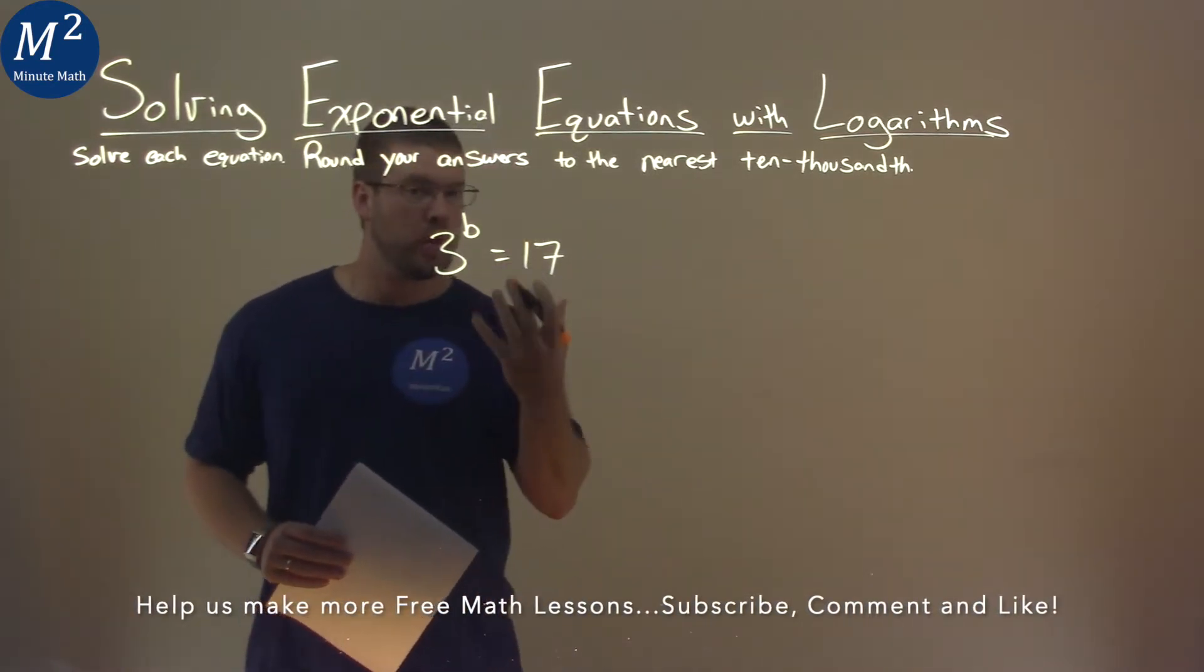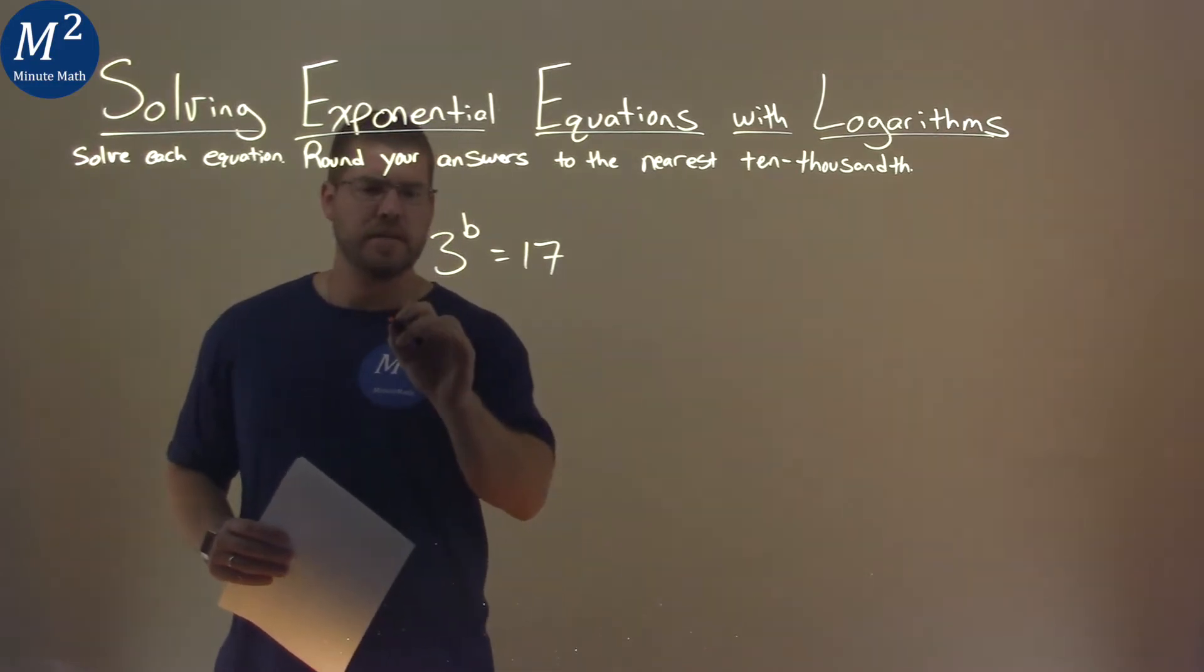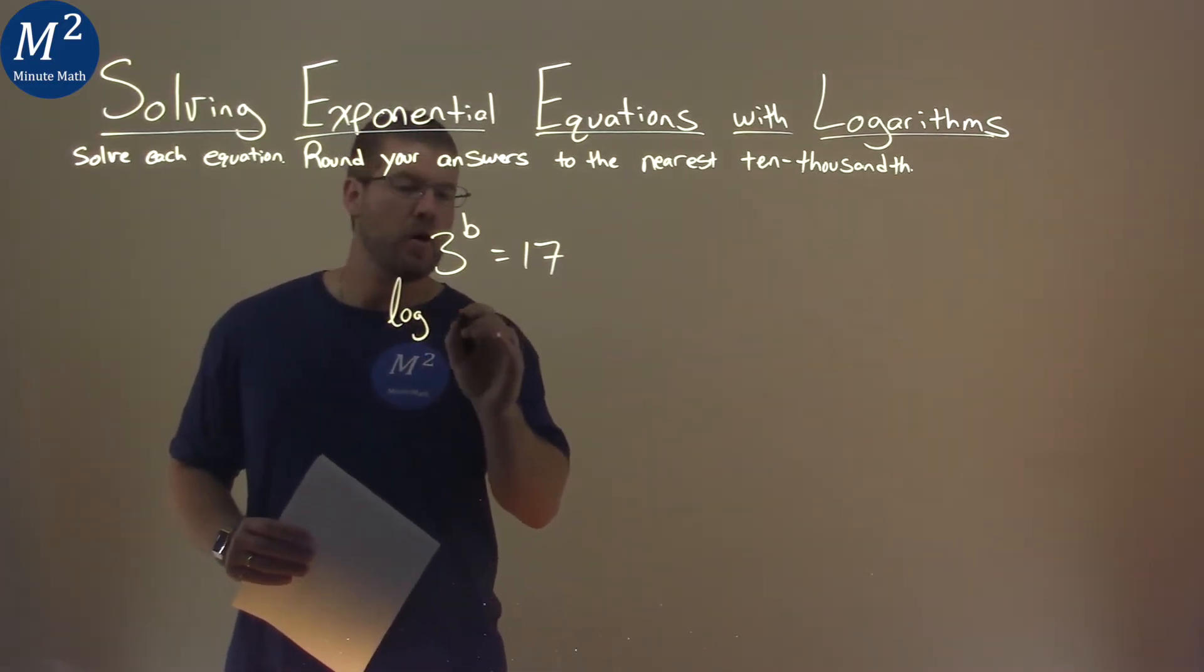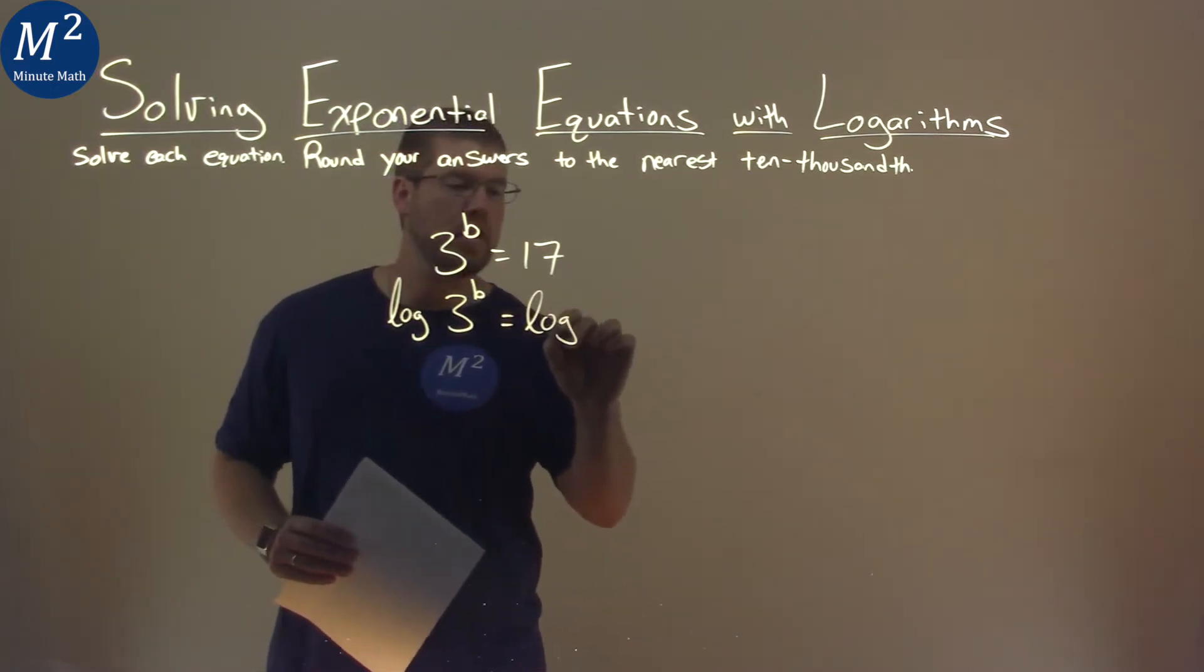Well, one thing we know about logarithms is we can take the log of both sides there, so if I take the log of 3 to the b is equal to the log of 17.